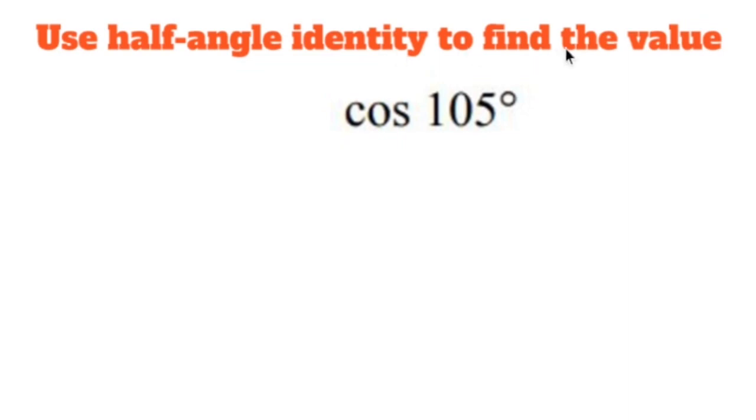Use the half angle identity to find the value of cosine of 105 degrees. All right, well, it wants me to turn cosine of 105 degrees into cosine of 210 over 2.